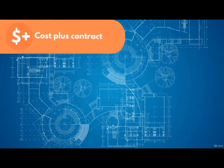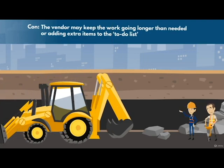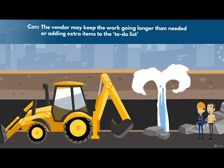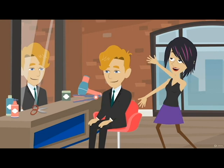The second type is called cost plus. This is where the buyer agrees to pay any cost incurred by the vendor performing the work. This can be a fixed additional fee, a variable fee, or a mix of the two. Either way, it gives the buyer the flexibility to adapt the spending in accordance with the work being done. But with that comes the risk of covering all extra costs, along with the chance that the vendor may keep the work going longer than needed, or adding extra items to the to-do list. This contract makes more sense if the scope is not easy to define, but proper controls need to be put in place to ensure money is only spent on things essential for the project — a fancy new haircut for the vendor doesn't fall into this category.